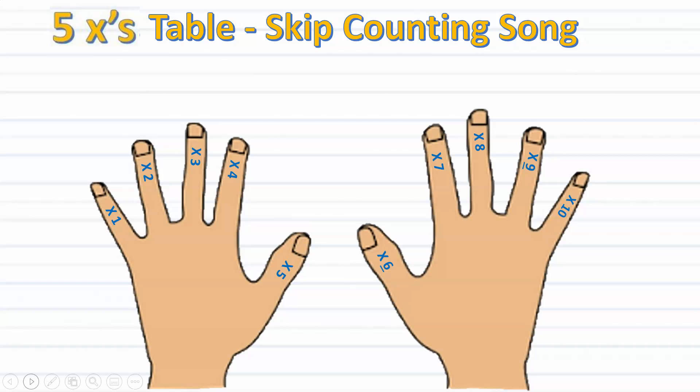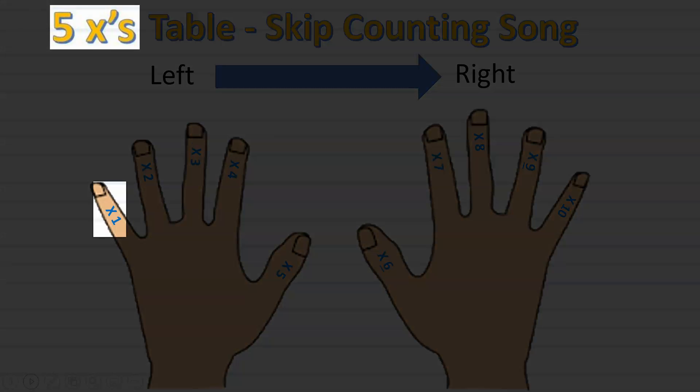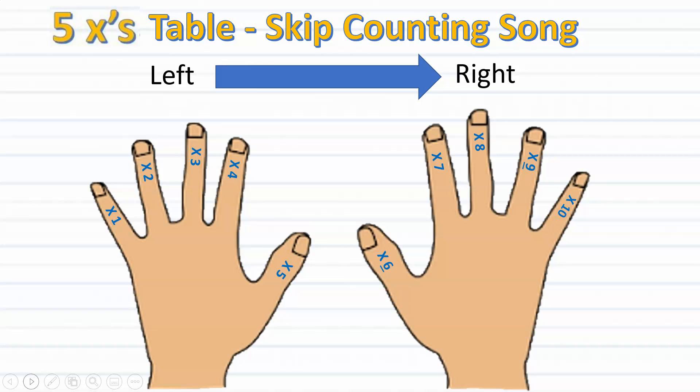We will assign each finger a number counting from left to right. As we can see in this picture, the pinky on the left is one, ring finger two, middle finger three, pointer finger four, thumb five.